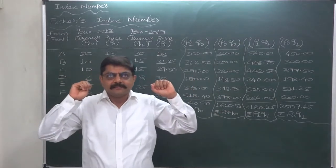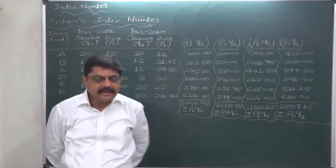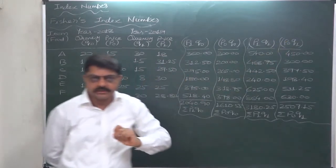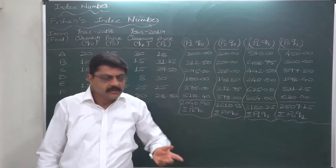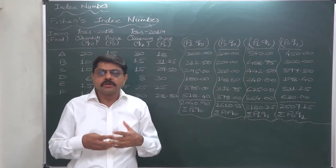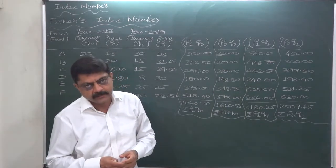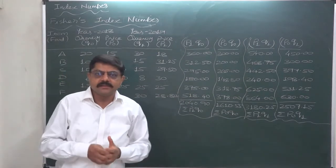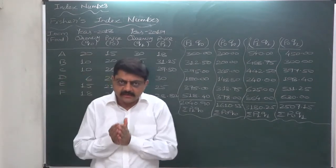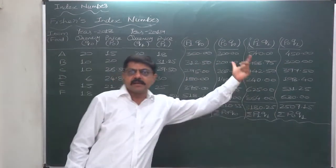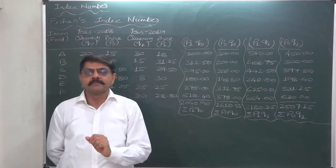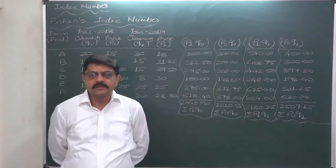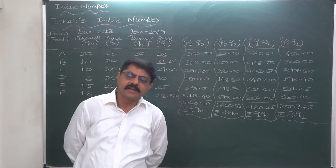The important question is: geometric mean of what? Fisher did not deny using base year or current year quantities — he suggested considering quantities of both years. In other words, he suggested considering both realities while calculating the index number for the current year. So it is a combination of Laspeyre's and Paasche's index numbers. Fisher suggested taking the geometric mean of Laspeyre's index number and Paasche's index number as the final price index number.